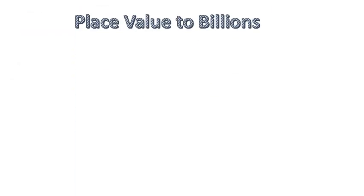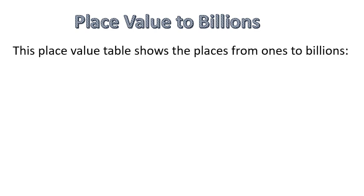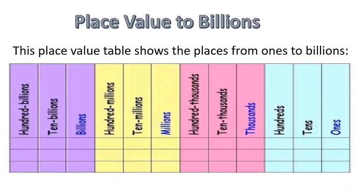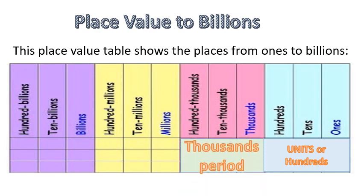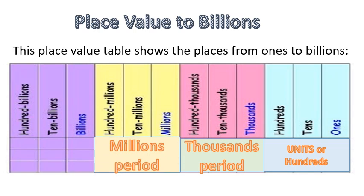Place value to billions. This place value table shows the places from ones to billions. Ones, tens, and hundreds are in the units period. Thousands, ten thousands, and hundred thousands are in the thousands period. Millions, ten millions, and hundred millions are in the millions period. Billions, ten billions, and hundred billions are in the billions period.